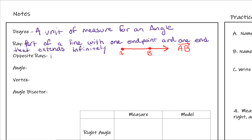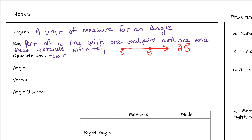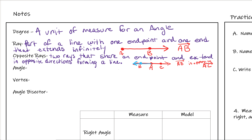Next, we have opposite rays. Opposite rays are two rays going in opposite directions that share an endpoint. They essentially create a line — one ray goes to the left, the other from that same endpoint goes to the right, going forever in both directions. Opposite rays are collinear because they create a line, so they're on the same line.